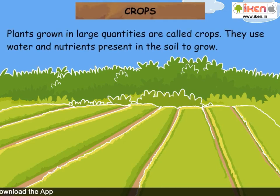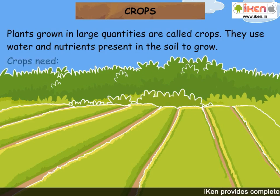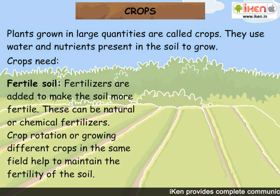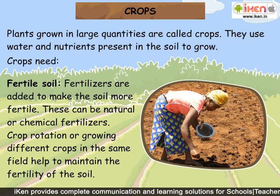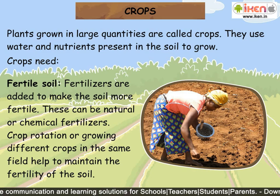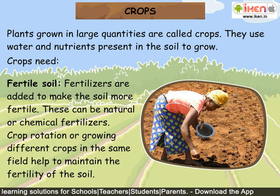Plants grown in large quantities are called crops. They use water and nutrients present in the soil to grow. Crops need fertile soil. Fertilizers are added to make the soil more fertile; these can be natural or chemical fertilizers. Crop rotation, or growing different crops in the same field, helps maintain the fertility of the soil.